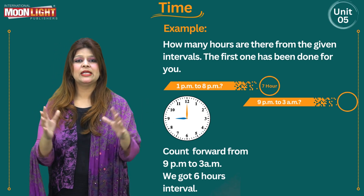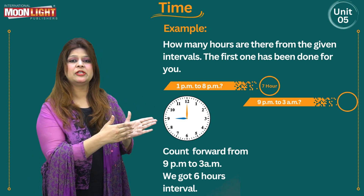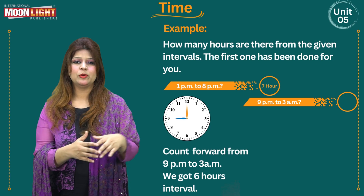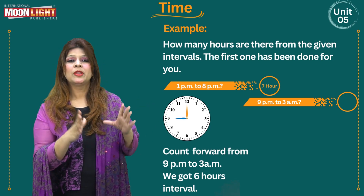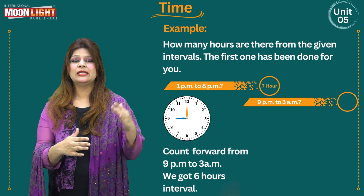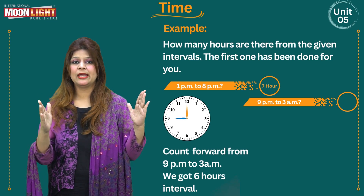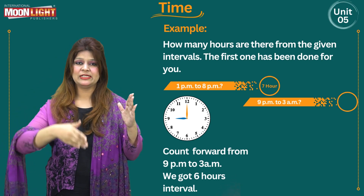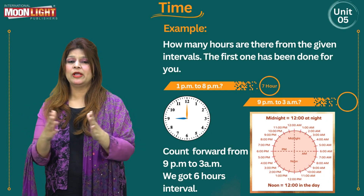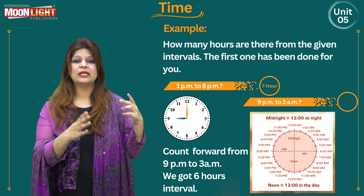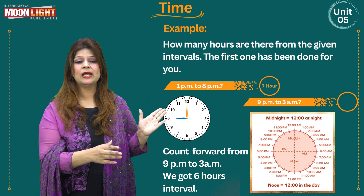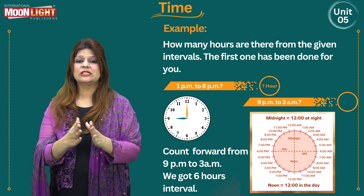In part b, the question is from 9 PM to 3 AM — one is PM and the other is AM, so don't be confused. The clock shows 9 o'clock. This side from 12 is the AM side and the other side is the PM side. The midnight is 12 AM at night, and 12 PM is the noon — the peak time. This is the main concept to be clear on.